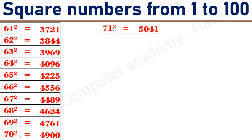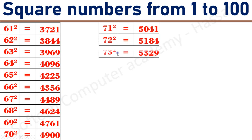71 square equals 5041. 72 square equals 5184. 73 square equals 5329. 74 square equals 5476.